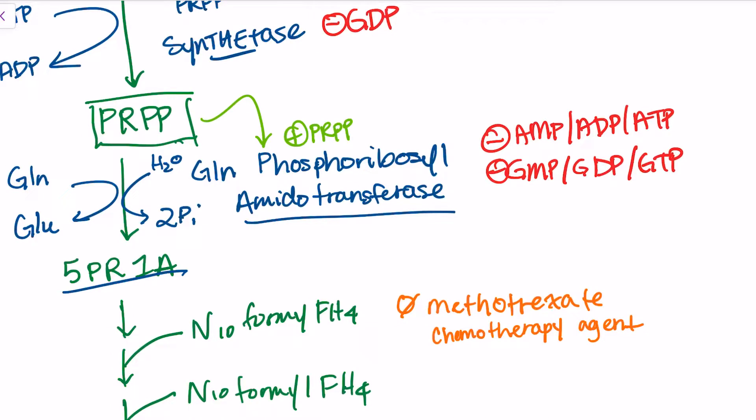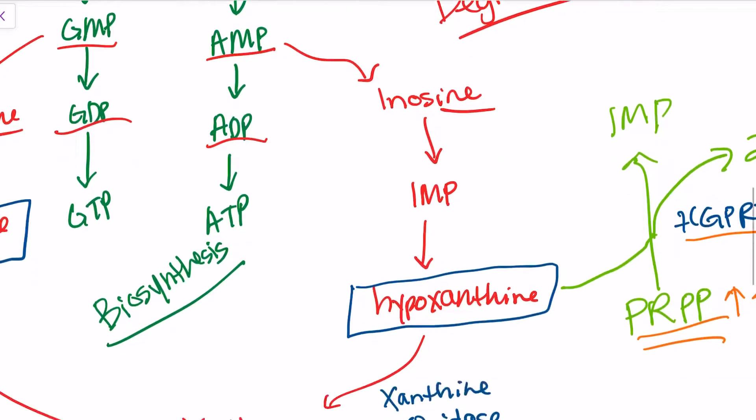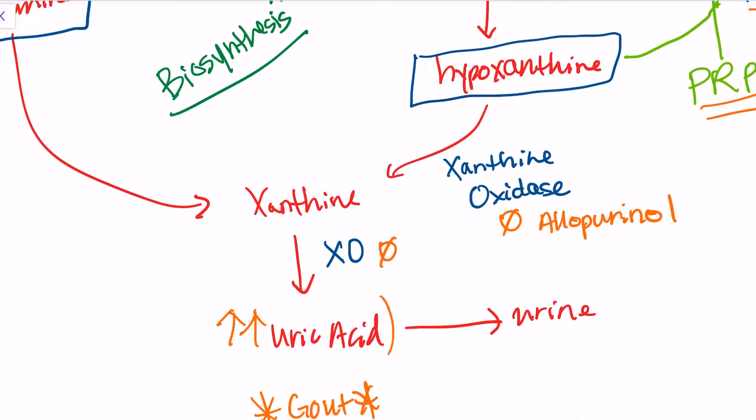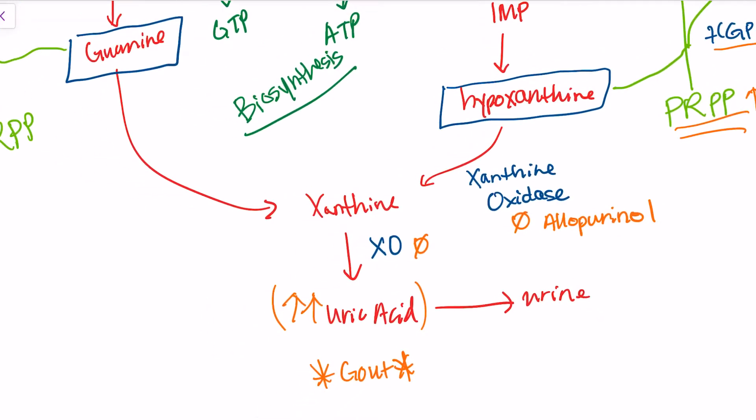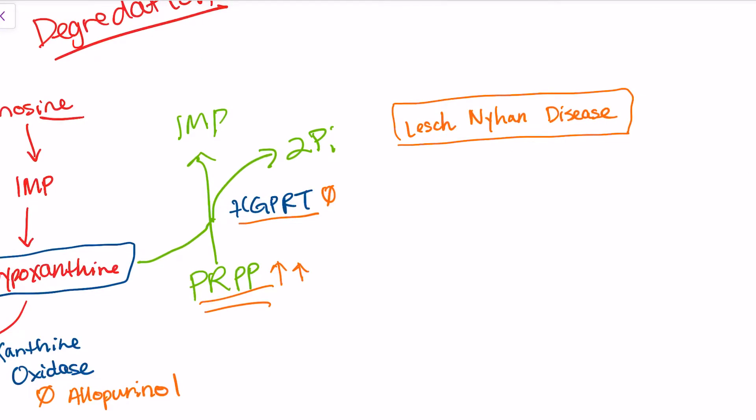Whenever we have a bunch of PRPP, we're not only disallowing degradation, but causing this pathway to go into overdrive. Now we have all this biosynthesis, and when we have a lot of biosynthesis, we have a lot of degradation. Now we have this huge buildup of uric acid. Anytime we have a lot of uric acid, we have gout. So one symptom of Lesch-Nyhan disease is crippling gouty arthritis. Another is mental retardation, and they're also prone to self-mutilation, which goes along with mental retardation.